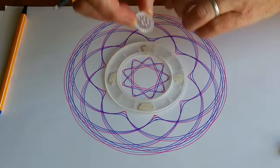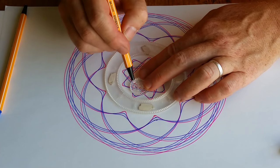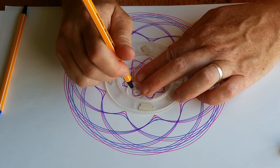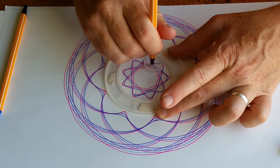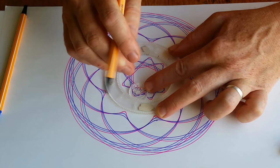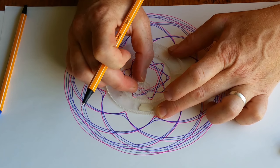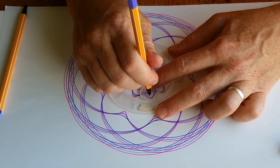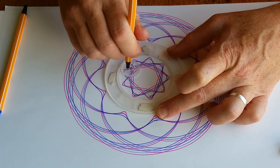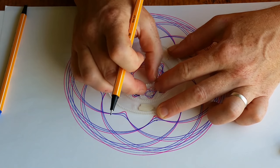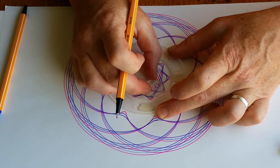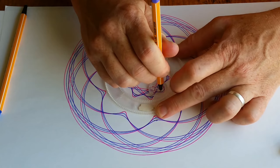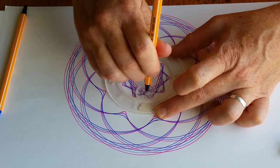Finally I'll line hole number seven up with the previous pattern. Remember this wheel makes a three pointed pattern with the inside of this ring. No matter which hole you use, you get a three pointed pattern.